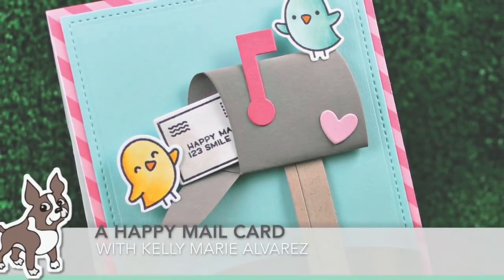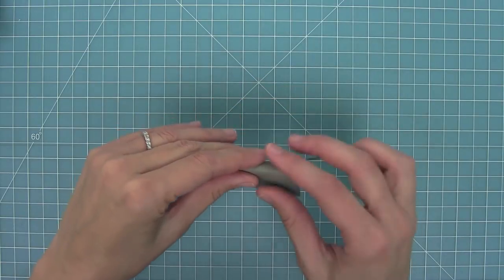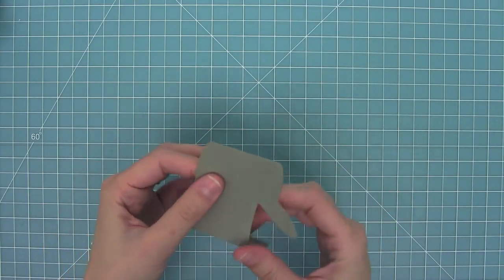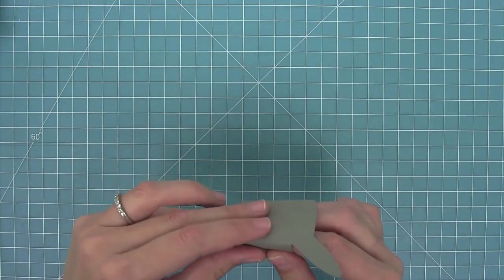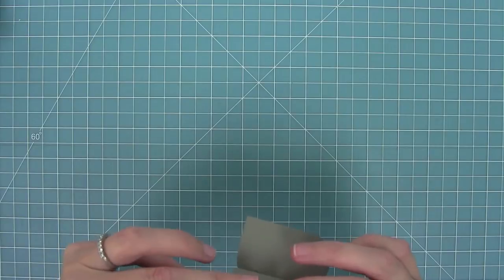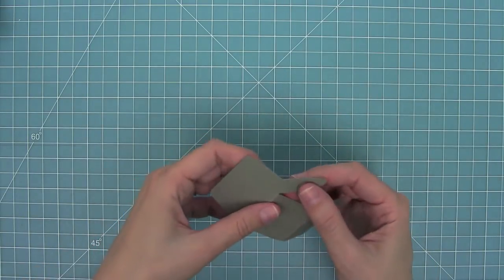The first thing I've done is die cut a Happy Mail mailbox. The first thing you're going to do is fold along the two score lines that the die creates for you. I'm going to fold that first one and now the top one. I'm also going to fold along the score line that creates the little opening flap of the mailbox too.